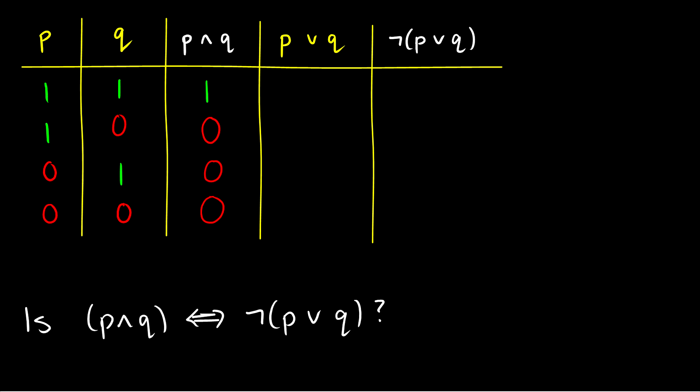P∨Q is true when at least one of P or Q is true. So it's true in the first three rows — P is true in the first two rows, and Q is true in the third — but false in the fourth row because P and Q are both false. So P∨Q gives us 1, 1, 1, 0. Now ¬(P∨Q) is just the negation of that column, giving us 0, 0, 0, 1.